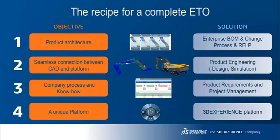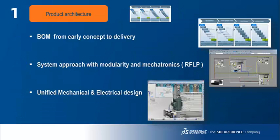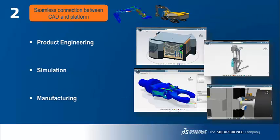Now that we have explained what ETO consists of and what the KPIs are to measure its efficiency, we will explain the four main objectives and what we consider as the four solutions to improve processes and establish an efficient ETO approach. To manage the product architecture, we see three main components: first, the efficiency of the bill of materials process; second, having a system approach; and third, the ability to integrate different disciplines on a single platform. Thanks to this multidisciplinary approach, you can now seamlessly connect design, simulation and manufacturing, which is critical to implementing your ETO process.